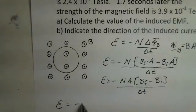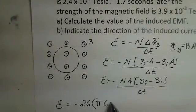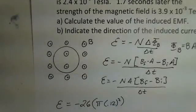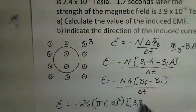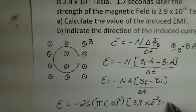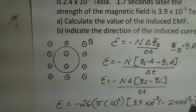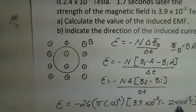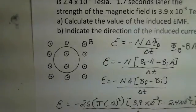Our EMF: minus, there's 26 turns of wire. We have pi r squared for the area, 12 centimeters is the radius. Then we have our magnetic fields to account for. The final magnetic field, 3.9 times 10 to the minus 3 teslas, and the initial magnetic field, 2.4 times 10 to the minus 3 teslas. I'm doing a delta type calculation here. Final magnetic field minus initial magnetic field produces the change of flux. And this change we were told took 1.7 seconds.